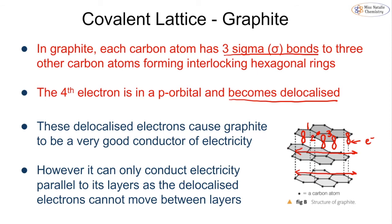So graphite has layers of interlocking hexagonal rings stacked on top of one another, with delocalized electrons within each layer. These delocalized electrons make graphite a very good conductor of electricity — which is why in electrolysis, carbon electrodes made of graphite are used, as graphite conducts electricity well without reacting with many substances. However, it can only conduct electricity parallel to its layers, because the delocalized electrons can only stay within their individual layers and cannot move between layers.